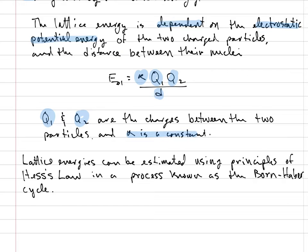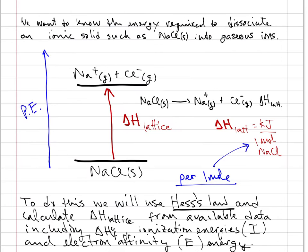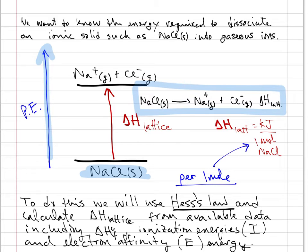Lattice energies can be estimated using the principle of Hess's law in a process known as the Born-Haber cycle. With a potential energy diagram we can depict the dissociation of solid sodium chloride into the gaseous ions. The thermochemical equation for this process provides us with the lattice energy.